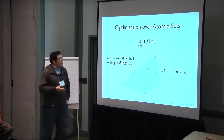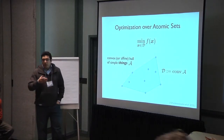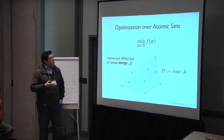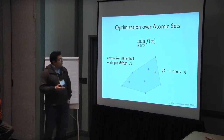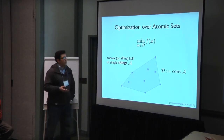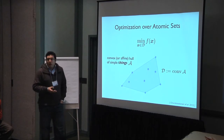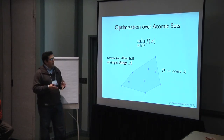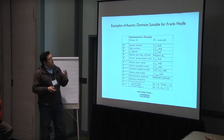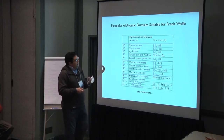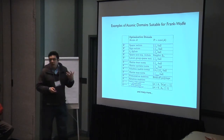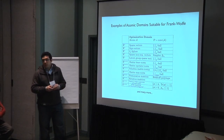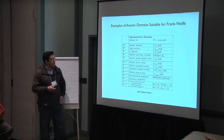The common feature of all these algorithms is that they can all perform optimization over atomic sets. In a canonical form, we can write this problem as the minimization of a function f of some argument x that lives in a set described as a convex or affine hull of some simple things that we call atoms. These representations can describe many kinds of sets, such as the set of sparse vectors, the set of low-rank matrices, or the set of permutation matrices.